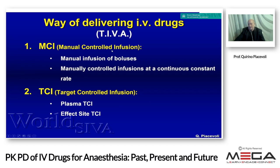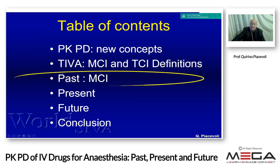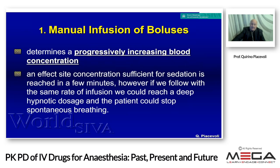The old way to perform intravenous anesthesia is manual control infusion — done with boluses or continuous constant rate infusion. The modern approach is target-controlled infusion: plasma TCI or effect site TCI, which is much better.